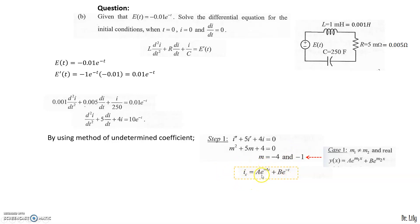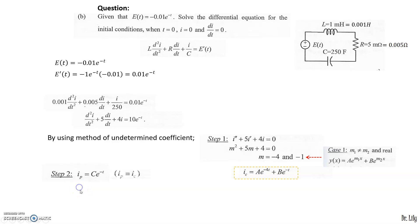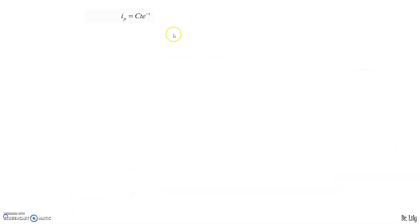Next, find the particular integral. Since f(t) = 10e^(−t), we try ip = C·e^(−t). However, comparing ip with ic, we see C·e^(−t) matches the B·e^(−t) term — they have the same pattern. So we must multiply ip by t, giving new ip = C·t·e^(−t). Checking again, this no longer matches ic, so this is the final form of ip.